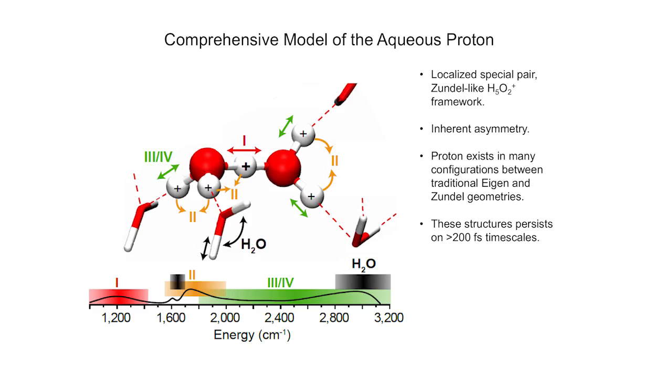Surprisingly, these individual arrangements appear to persist on timescales of a few hundred femtoseconds, much longer than previously thought. This suggests that the proton is actually not as sensitive to local fluctuations in the water-hydrogen bond network as believed.